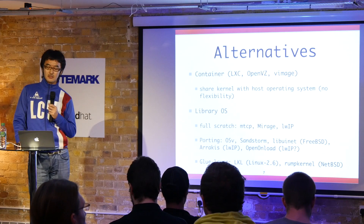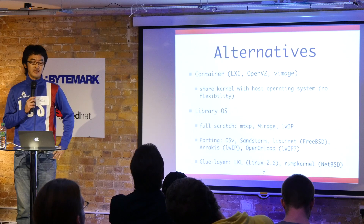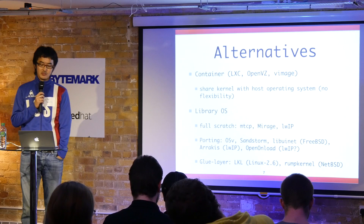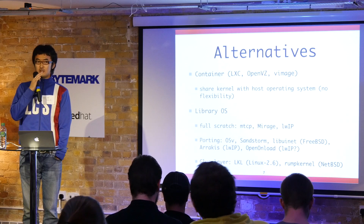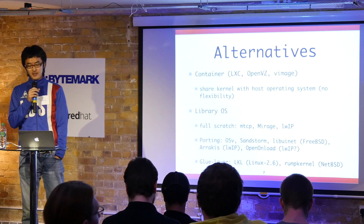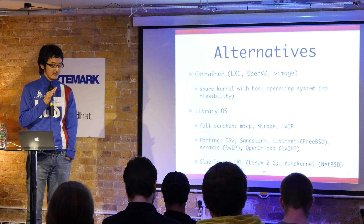Another interesting approach from the last two or three years is the library operating system, a kind of user-space networking stack. There are already many projects: full-scratch-based ones like mTCP or Mirage, and porting-based approaches like OSv using a FreeBSD-based networking stack, Seastar, ArpGIS, and Open Onload. Not only academic projects but also industrial projects have been creating such library-based operating systems.